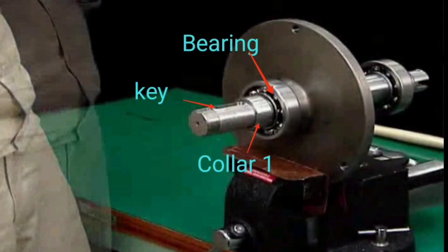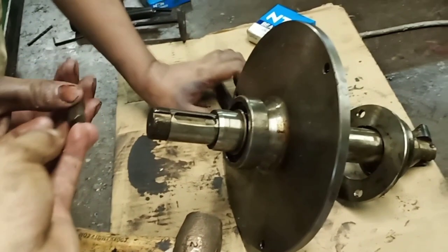On the friction pulley side, mount the bearing, followed by the Collar 1, and mount the key.